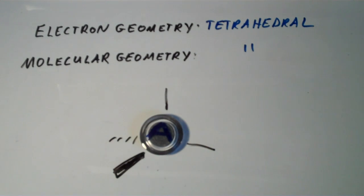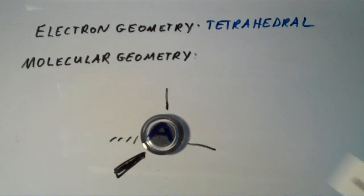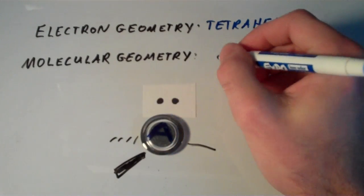And now here's where it gets interesting. What if we have one lone pair and three atoms? What does that look like? Well, the electron geometry is going to stay the same no matter what. As long as we have four electron groups, that's always going to be tetrahedral. But if one of those groups is a lone pair, we now have a situation in which this molecular geometry is called trigonal pyramidal.